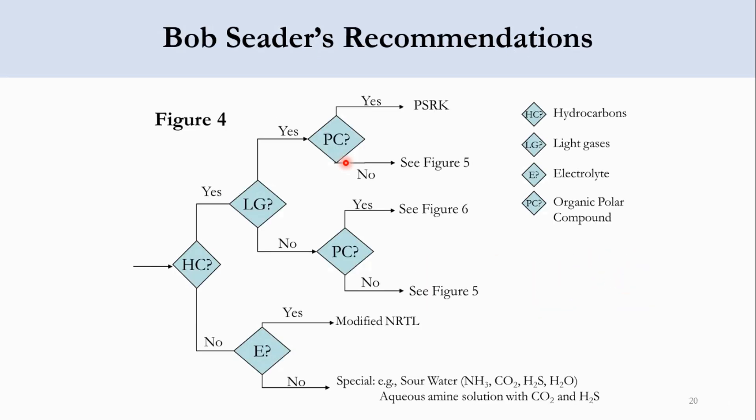Going to Bob Seader's recommendation, there are three figures related to it. The start point is HC, which means hydrocarbons. If hydrocarbons are not present, we check E, which means electrolyte.